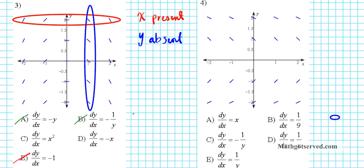Which one is correct? Option C guarantees the slope will always be positive because you're squaring x. Option D gives basically the negative of the input — plug in positive 1 and you get slope of negative 1. Since we can see tangent lines in the slope field with negative steepness, option C cannot be the answer. The answer is option D.